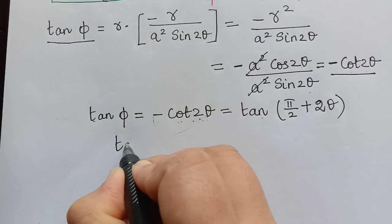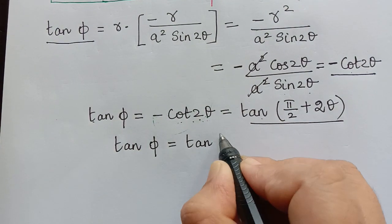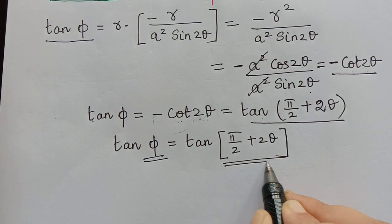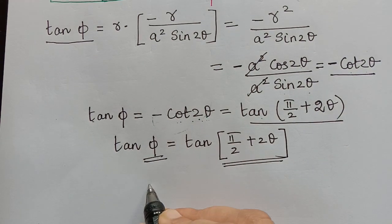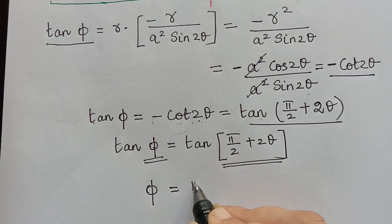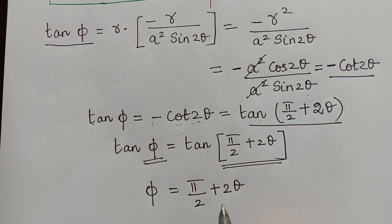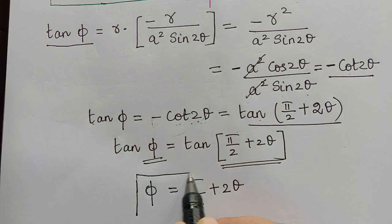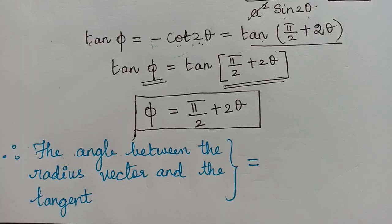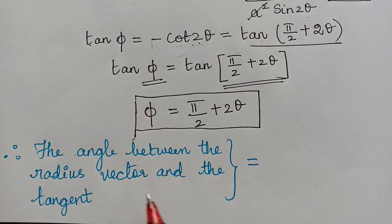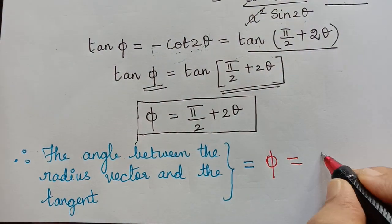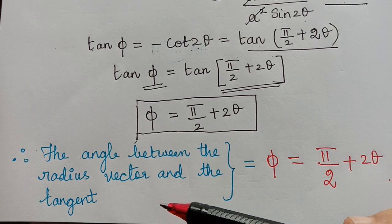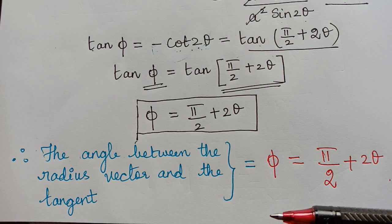We have obtained tan φ = tan(π/2 + 2θ). Comparing both sides and equating the angles, φ = π/2 + 2θ. Therefore, the angle between the radius vector and the tangent is φ = π/2 + 2θ. We will solve one more problem of the same kind in the next video. Thank you.